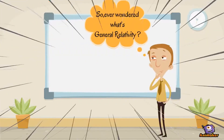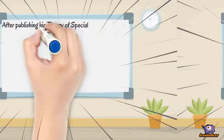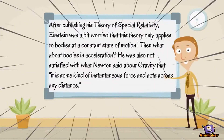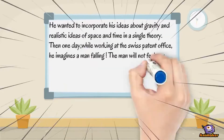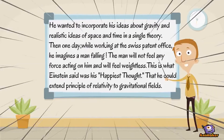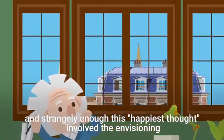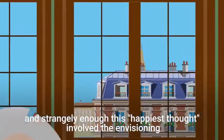It was really a groundbreaking theory and a towering achievement of 20th century physics. After publishing his theory of special relativity, Einstein was worried that this theory only applies to bodies at a constant state of motion — then what about bodies in acceleration? He was also not satisfied with what Newton said about gravity, that it is some kind of instantaneous force acting across any distance. He wanted to incorporate his ideas about gravity and realistic ideas about space and time in a single theory.